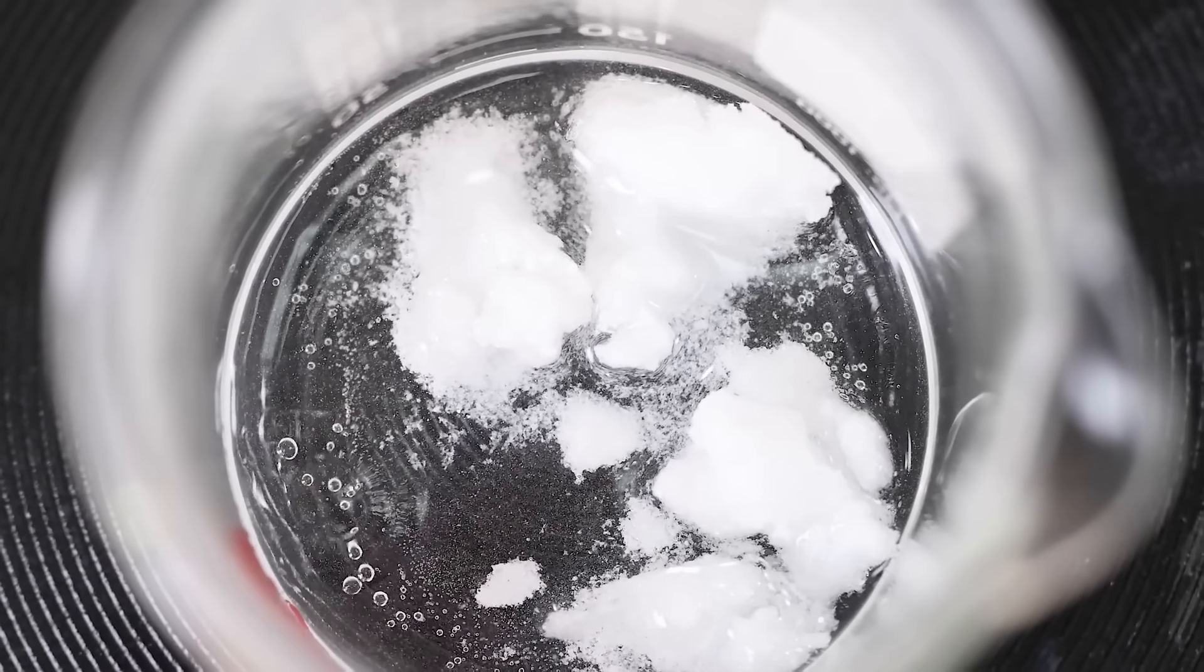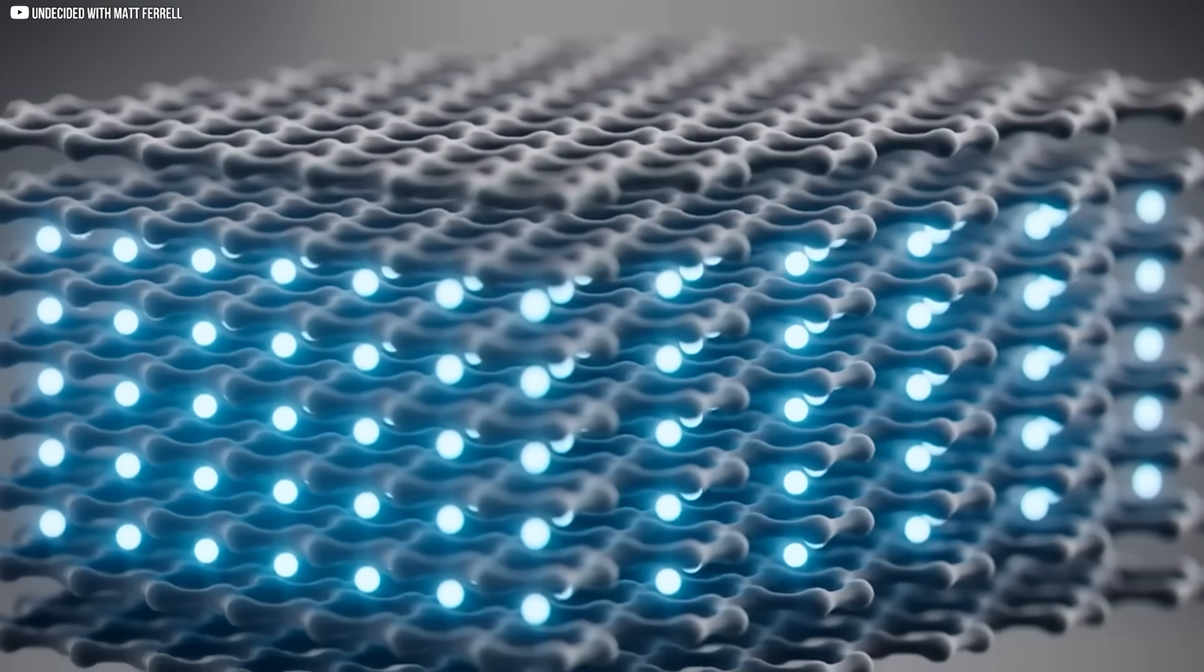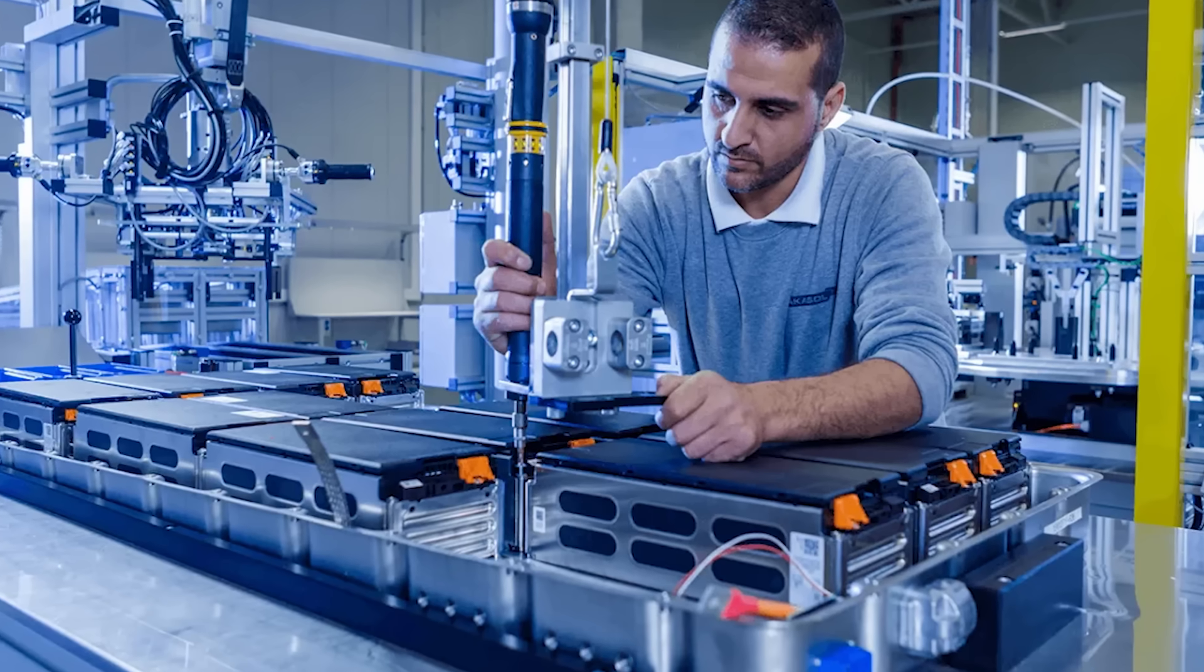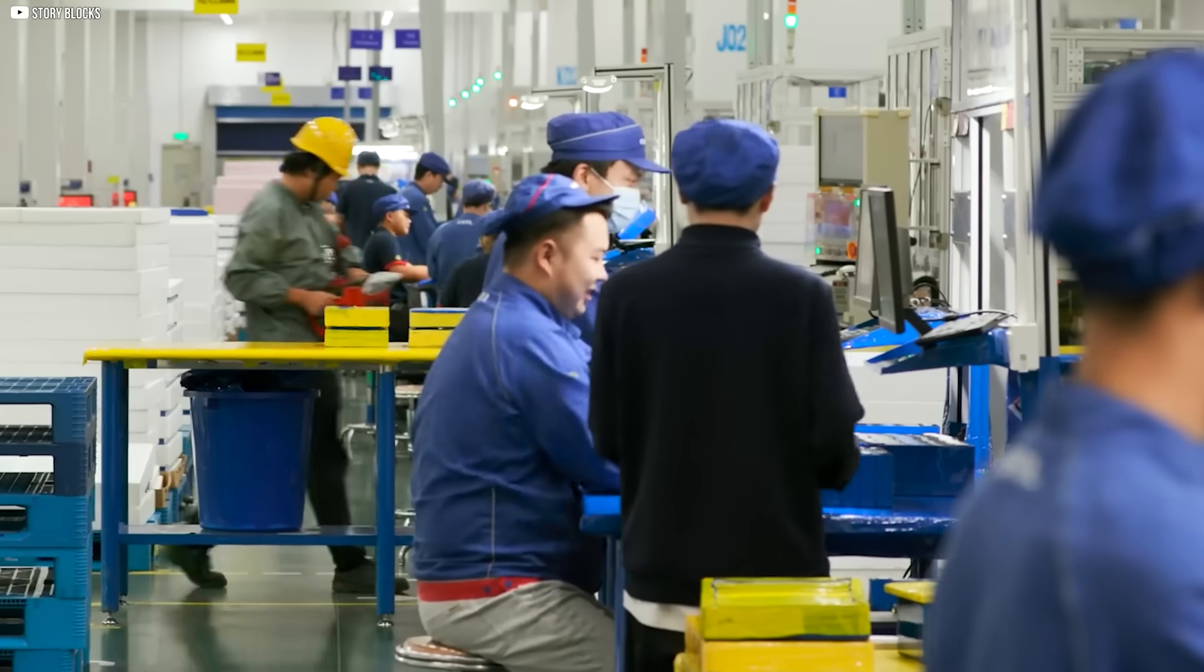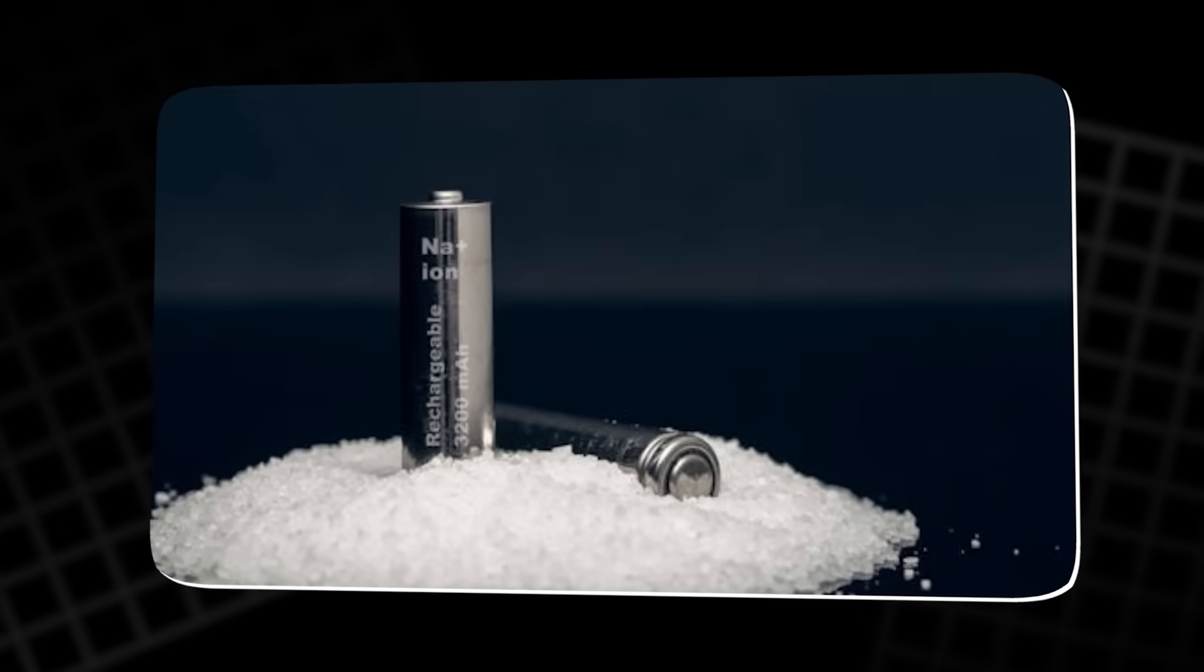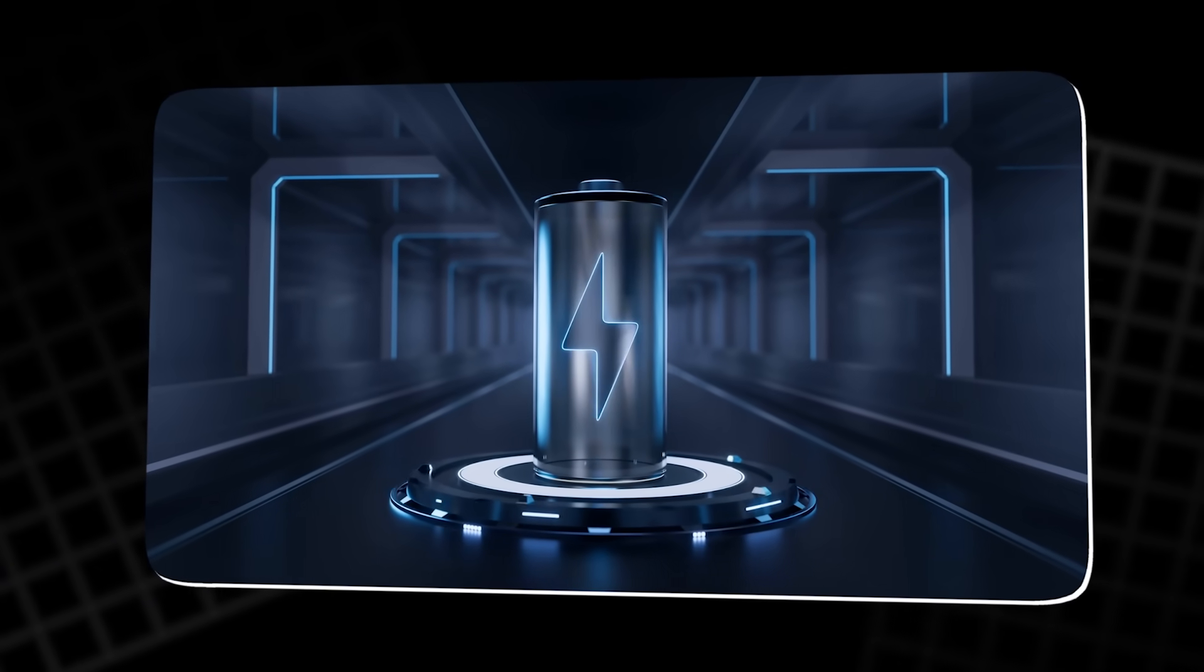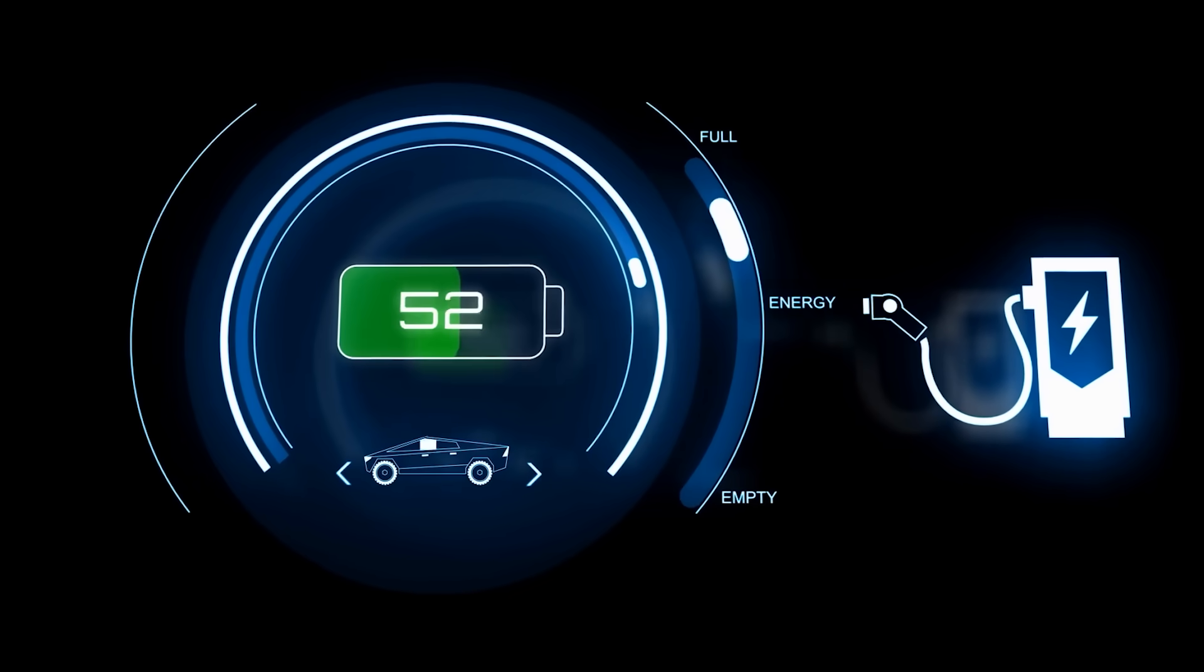For a long time, though, sodium wasn't seen as a serious competitor. Its lower energy density meant it couldn't store as much power in the same space. That's a problem when you're trying to build a battery for a long-range electric car. But recent developments have started to turn that assumption upside down. Battery researchers began noticing something interesting. While sodium couldn't match lithium in raw energy storage, it had strengths in other areas. It performed better in cold temperatures. It was safer, with a lower risk of overheating or catching fire. And most importantly, it could charge faster, much faster.